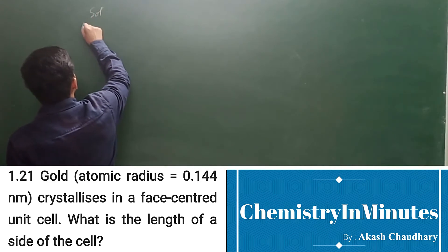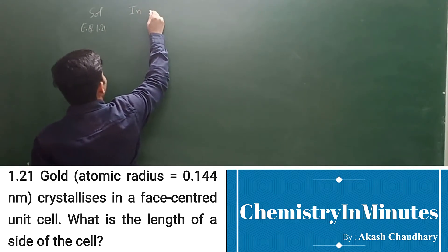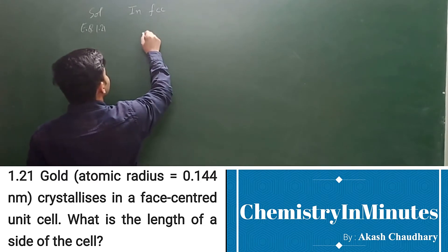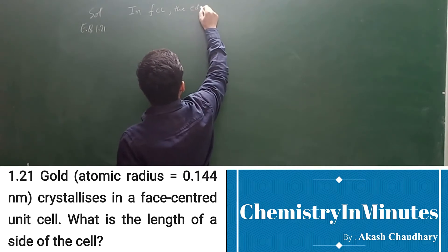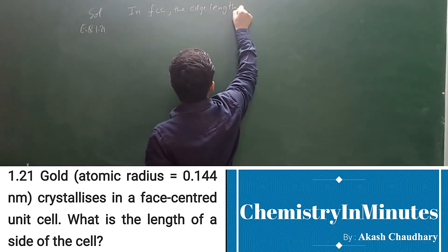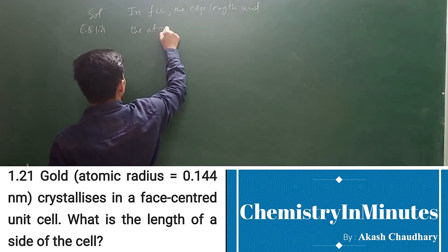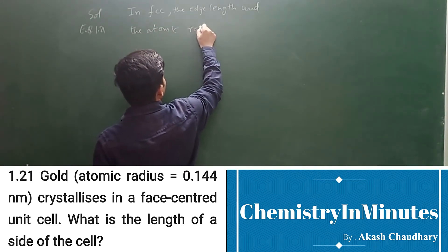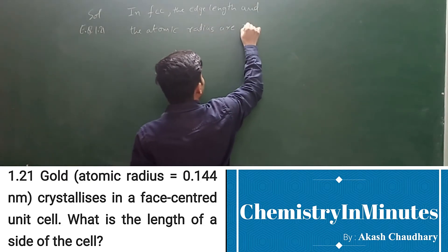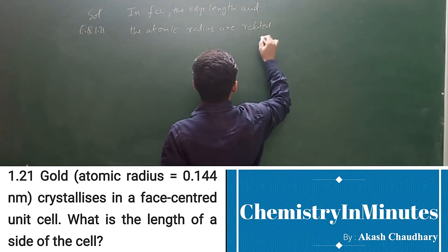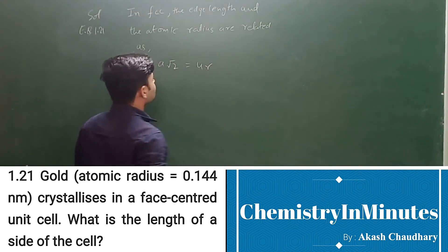Solution to exercise question 1.21. In FCC, the edge length and the atomic radius are related as a√2 equal to 4R. Why is this?